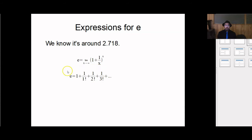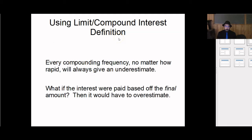I will mention there is a way using Taylor series to work with these factorials to get a more precise estimate more quickly than the one I'm going to work with. For this video, I won't be talking about Taylor series at all. I might do that in a later video. But this will work entirely with this limit definition of Euler's e: limit as x goes to infinity of (1 + 1/x)^x. So using the conventional compound interest definition, every compounding frequency, no matter how rapid, will always give a slight underestimate.